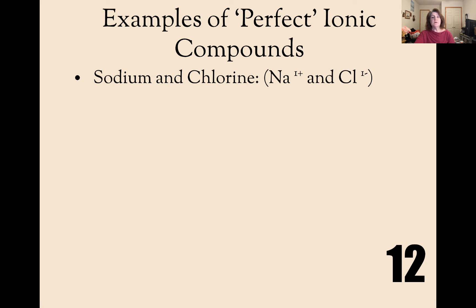Perfect ionic compounds are things like sodium and chlorine. Sodium has an oxidation of one positive. Chlorine has an oxidation of one negative. And when they combine, you simply write NaCl. Notice there's no spaces. Potassium and bromine. Potassium has an oxidation of one positive. Bromine has an oxidation of one negative. They combine to be KBr.